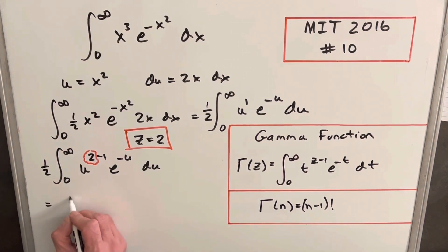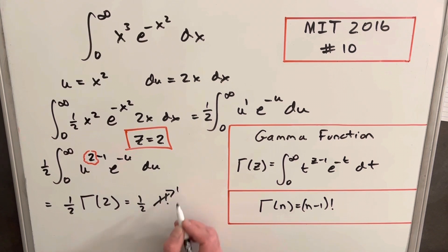So then we can rewrite this again as just half gamma of 2. Now our relationship to the factorial, this is only good, we can only use this for positive integers, but 2 is a positive integer. So then we can just put this in terms of a factorial, we can write this as a half times 2 minus 1, which is just 1 factorial. But 1 factorial is just 1, and so our answer is going to be just 1 half.